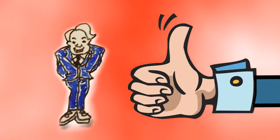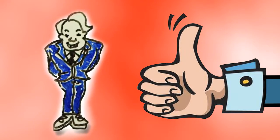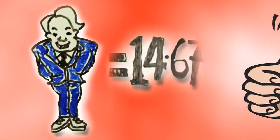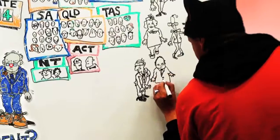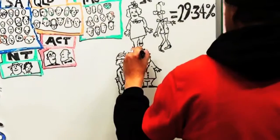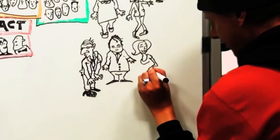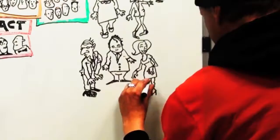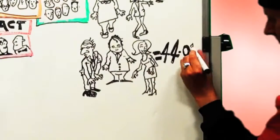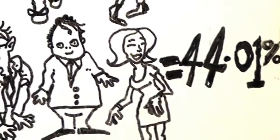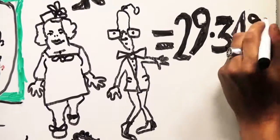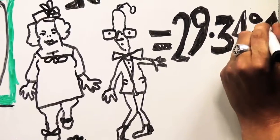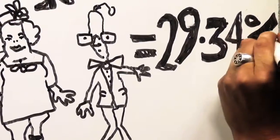As a rule of thumb, to get one WikiLeaks Party Senator elected, the party needs 14.67% of the vote. Generally, one of the major parties gets enough votes to gain three Senators — 44.01%. The other major party gets two Senators — 29.34%.